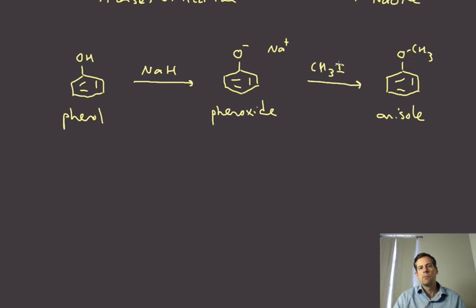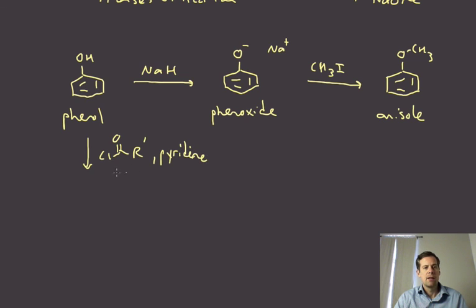The other one that we did talk about that is reasonably important as well is if we want to acylate that phenolic oxygen. Acid chloride in this case with pyridine, and we can, as you already know, acylate that phenolic oxygen as well.